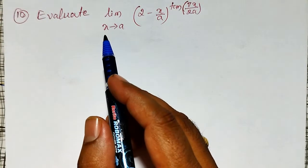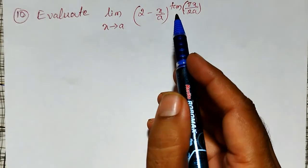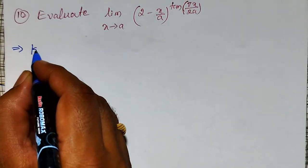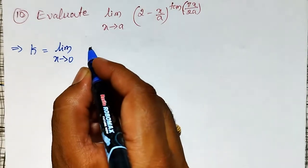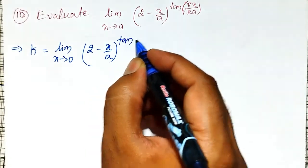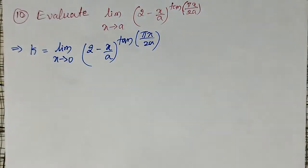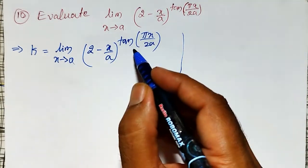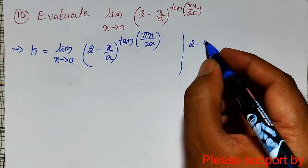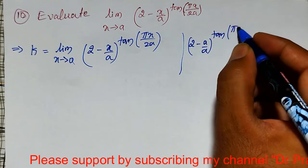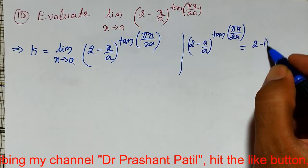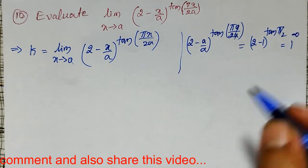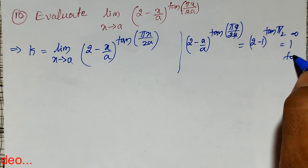In this video I am going to evaluate the limit as x tends to a of (2 minus x divided by a) raised to tan(πx/2a). First of all, let me call this limit value as k. To check the indeterminate form, I put x equal to a: (2 minus a/a) raised to tan(πa/2a) becomes 1 raised to tan(π/2), which is infinity. So it is the 1 raised to infinity form.